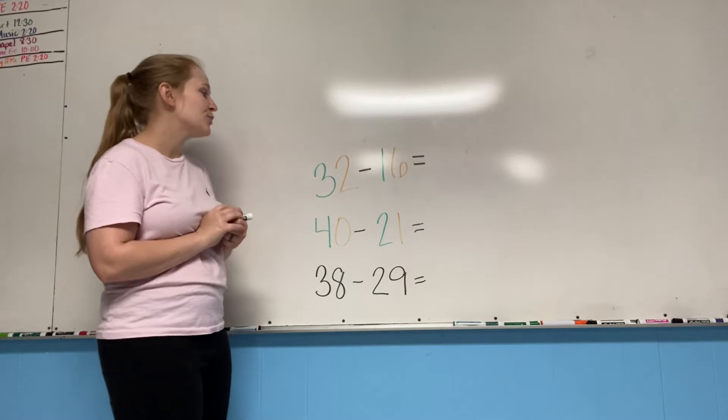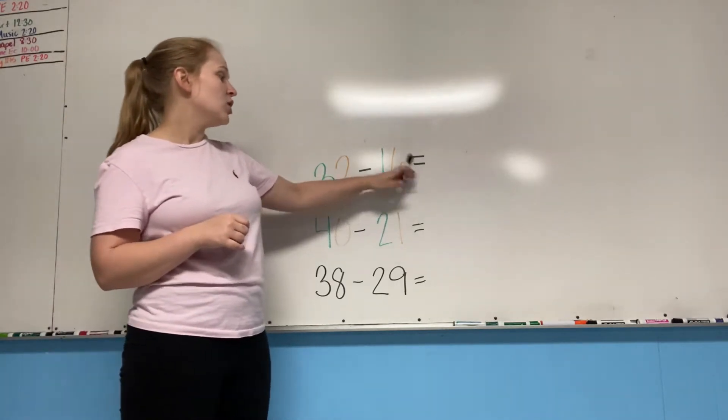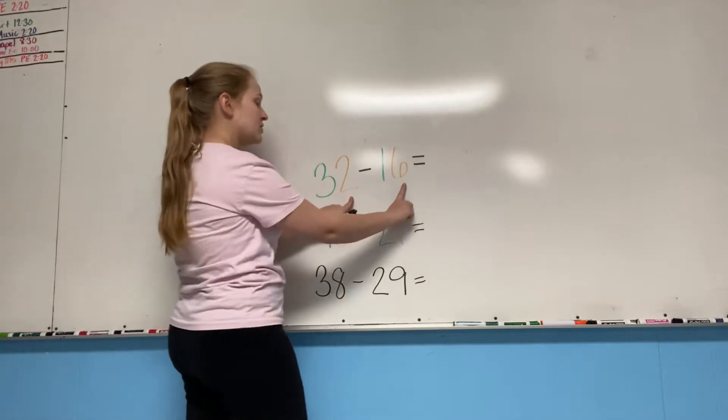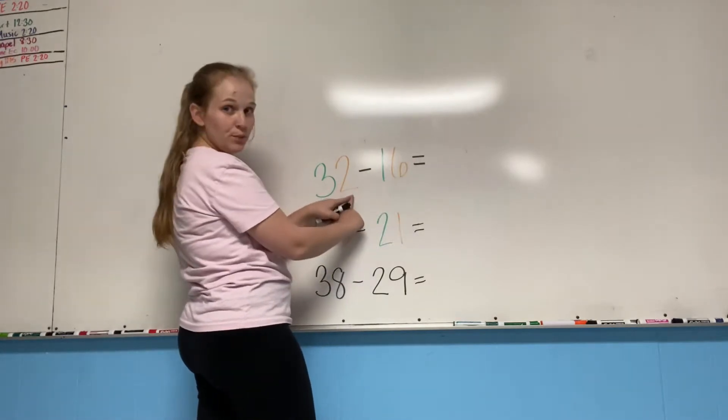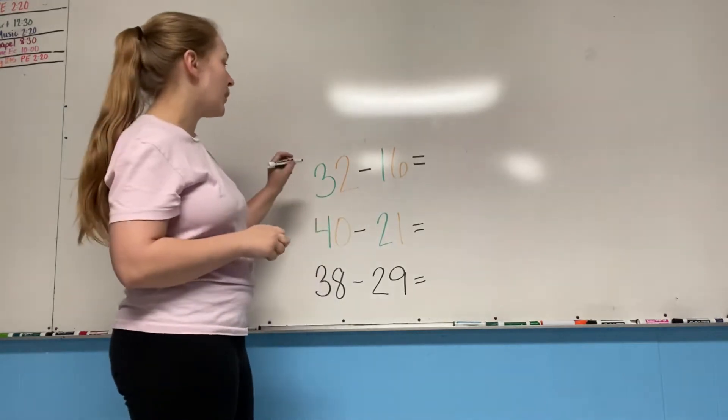So this first problem, 32 minus 16. Let's look at the ones place. Can six be subtracted from two? Can you do two minus six? No. So we're going to have to borrow.